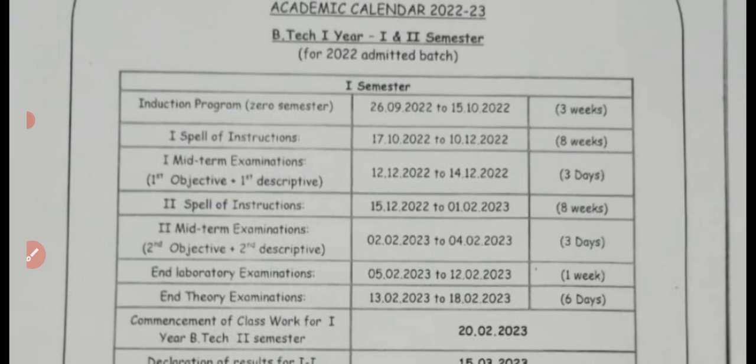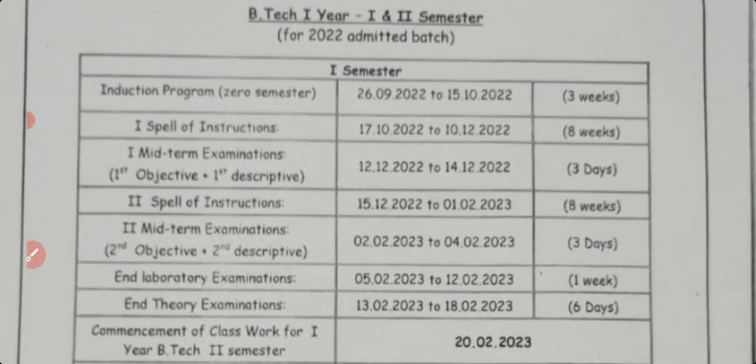Next, the second spell of instruction is from 15/12 to 1/2/2023 — up to February 1st, eight weeks of second spell of instruction. The second mid examination, both objective and descriptive, will be conducted around February.